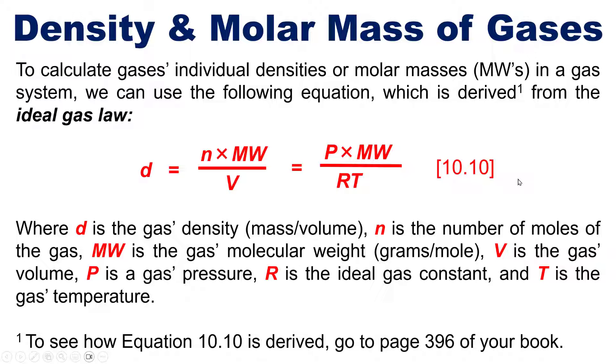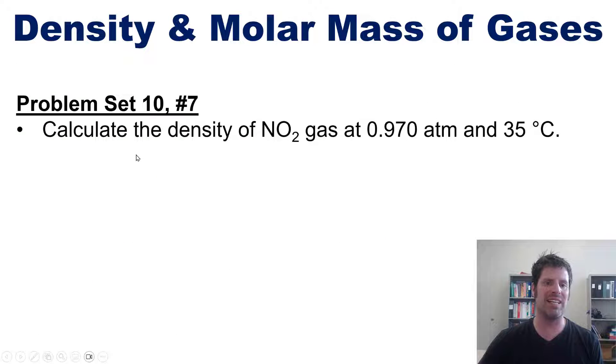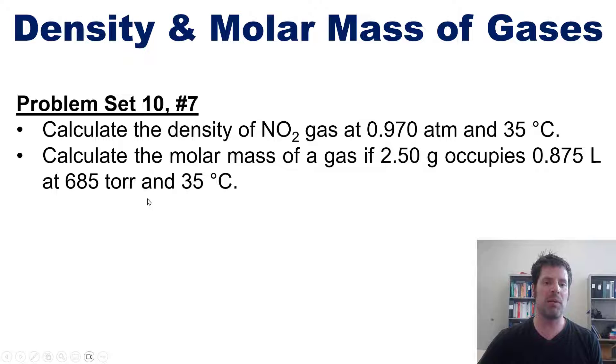This segues beautifully into an example problem. I want you to calculate the density of NO2 gas at this pressure and temperature, and separately the molar mass of a gas if 2.5 grams of it occupies this volume at this pressure and temperature. I'm not going to solve this for you here, but I do have a link in the description to a separate video where I do, and of course it involves the equation that I just shared with you.